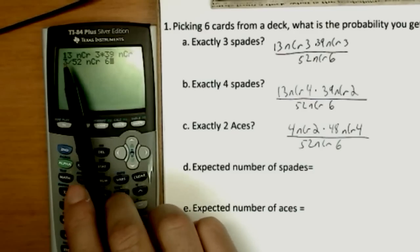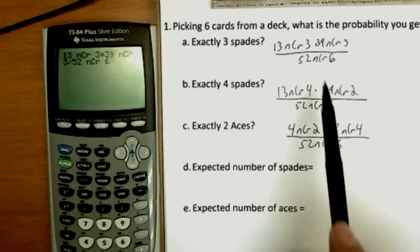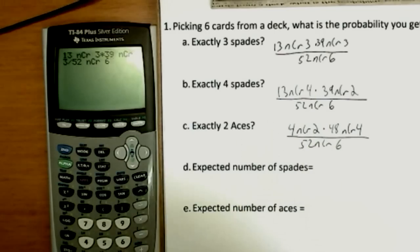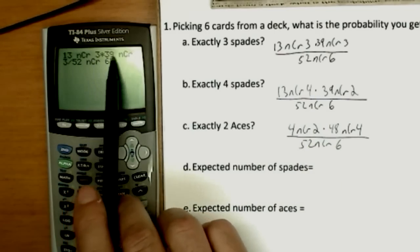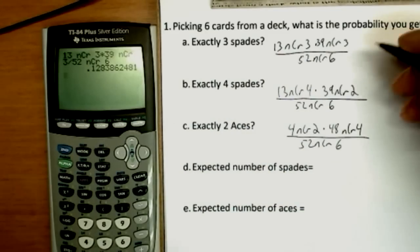So let's check and see what we've got. We want 13 choose three times, always a multiply here. I've seen a lot of pluses over the years on tests, and we really must have a multiply. 13 choose three, 39 choose three, 52 choose six. We've got what we want. We hit enter. Number 0.128.